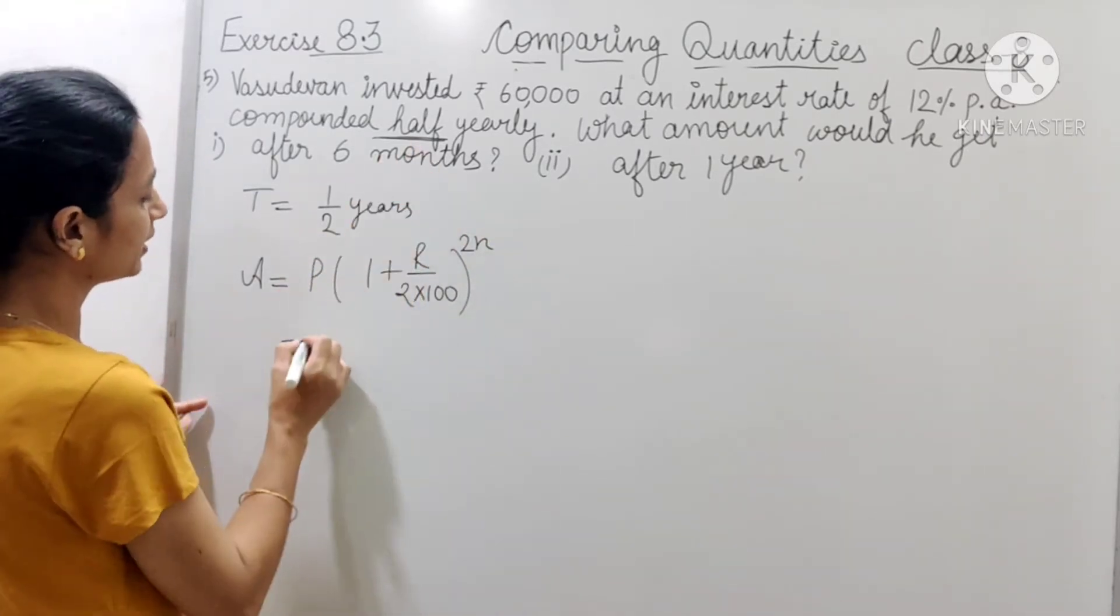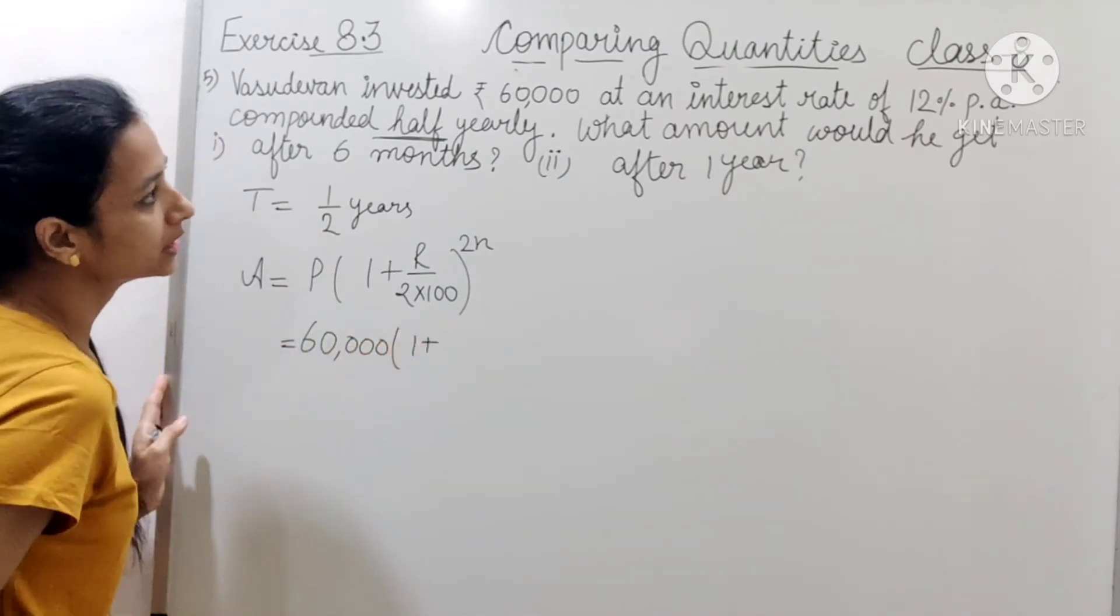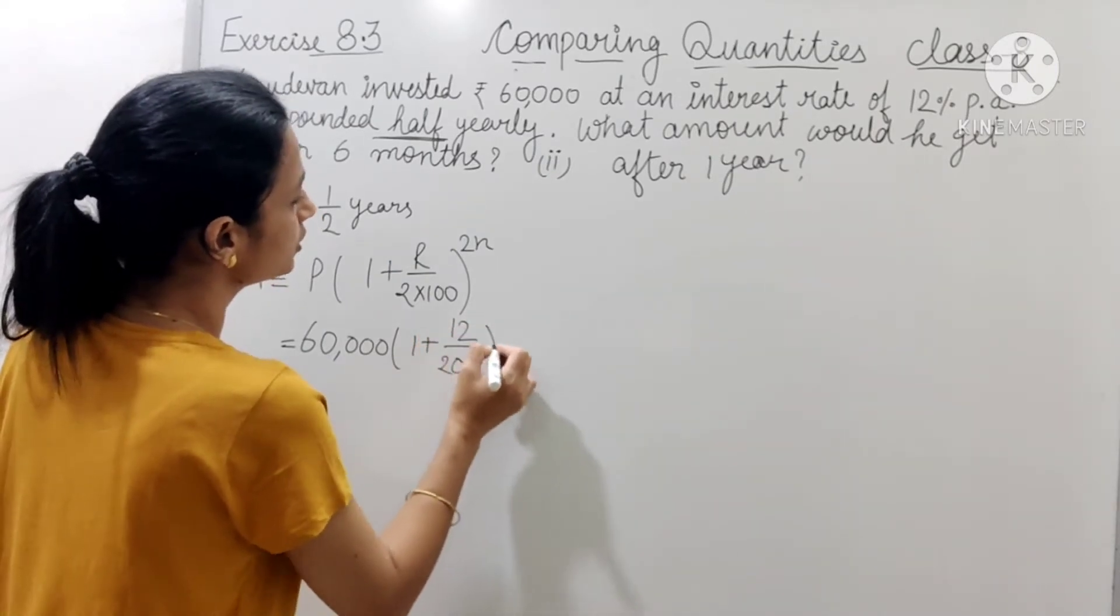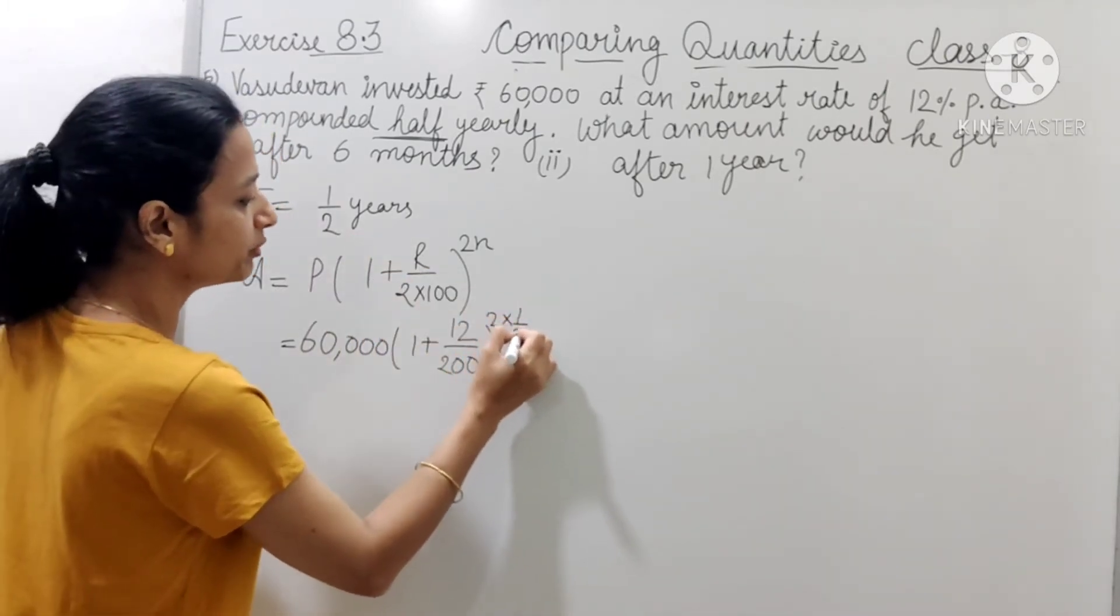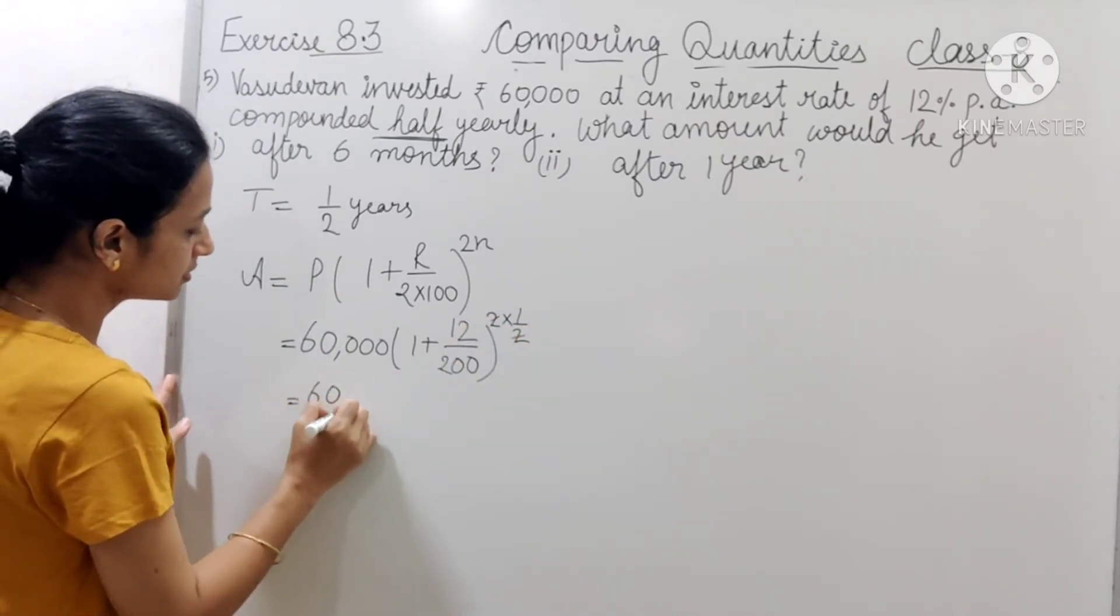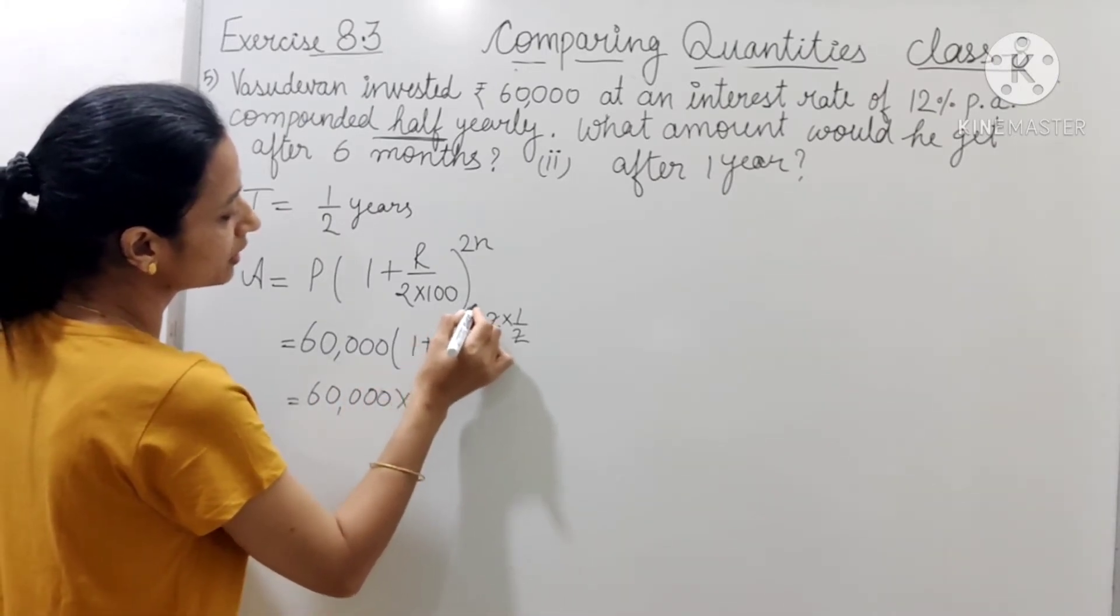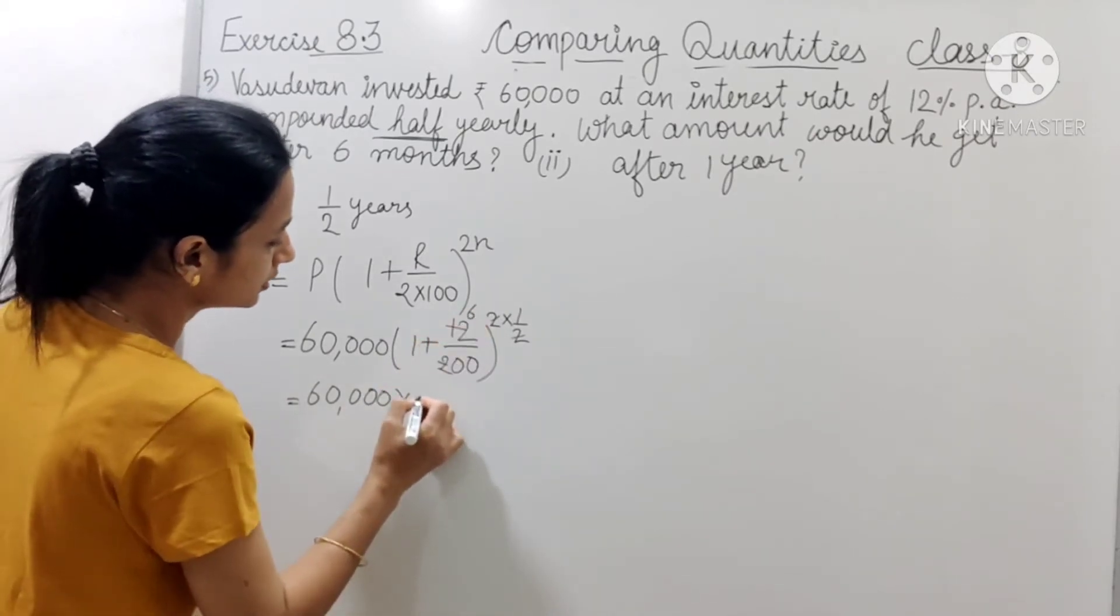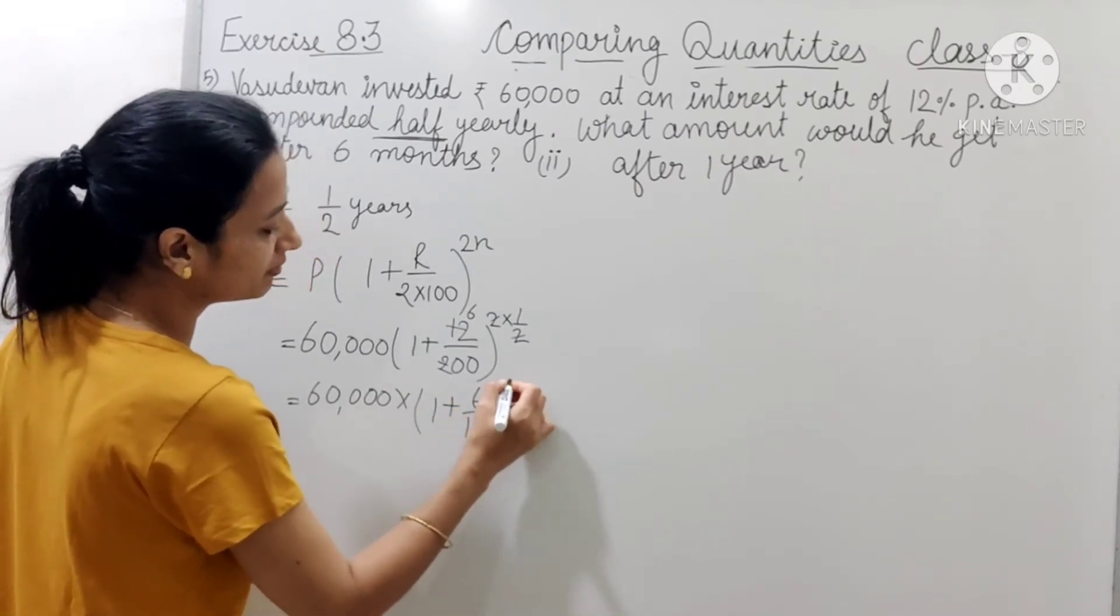Tho rate ke liye principle rakhenge. Principle hai humeara 60,000, 1 plus rate of interest kya hai? 12 upon 200 to the power 2 into half year, toh isko 1 by 2. Yeh 2 se 2 cancel ho jayega, aur kitna aaga hai? 60,000 into, isme bhi 2 se isko cancel karenge. Tho kitna aaga hai? 6 upon 100, or isko likhte hai, 1 plus 6 upon 100 to the power 1.